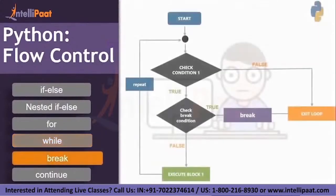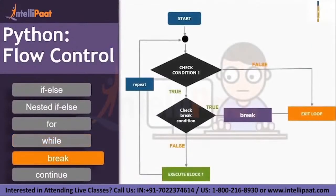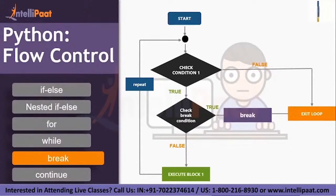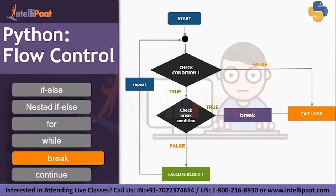Let's move ahead and learn about break. The break statement is used to break the loop at a certain condition. Let's understand this with the help of a flowchart. Start, check the condition — if the condition is true, then check the break condition. If the break condition is false, execute block one and repeat the loop. If the break condition is true, break out of the entire loop and exit.